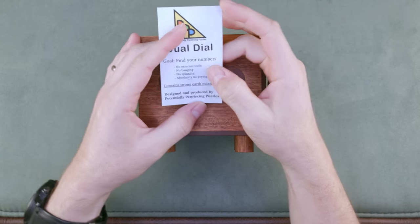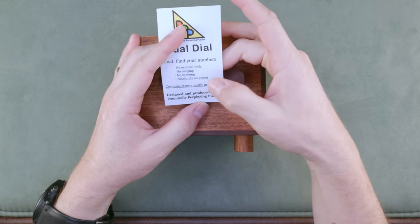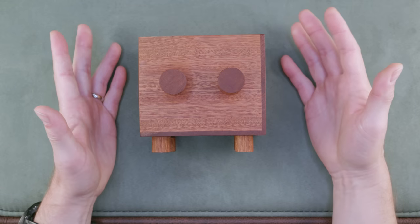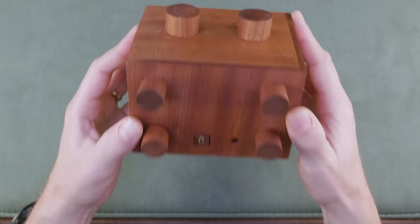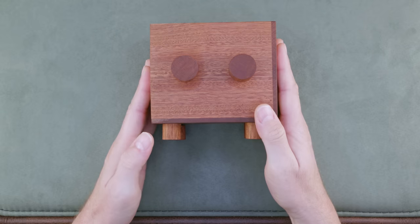And the rules that come with the puzzle are no external tools, no banging, no spinning, absolutely no prying. And after spoiler break, I'm gonna show you the solution step by step how you solve the dual dial.